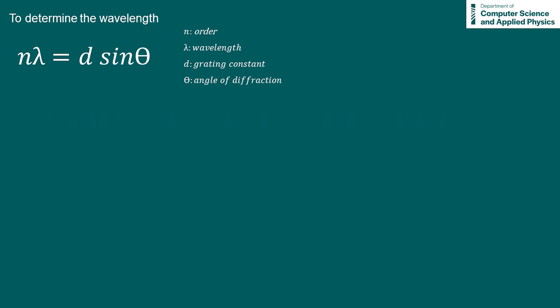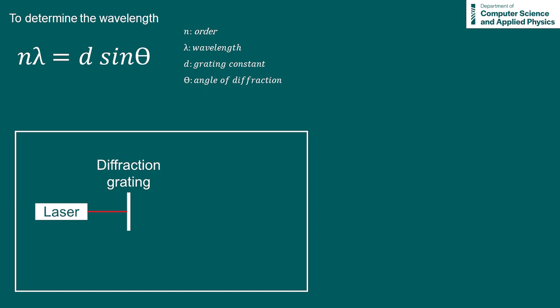In our experiment, our laser beam will strike our diffraction grating and form a diffraction pattern. The zeroth order, first orders, and possibly higher orders will be clearly visible. A right-angled triangle is formed between the zeroth order, the diffraction grating, and the first order.